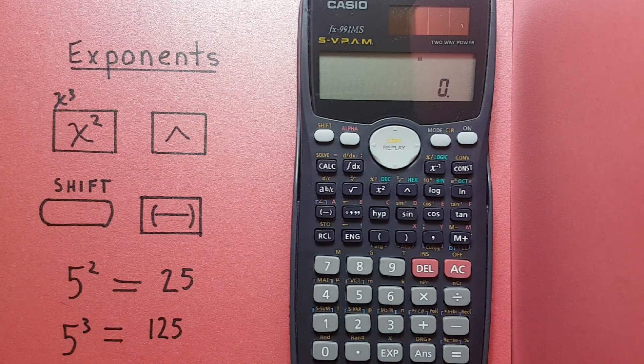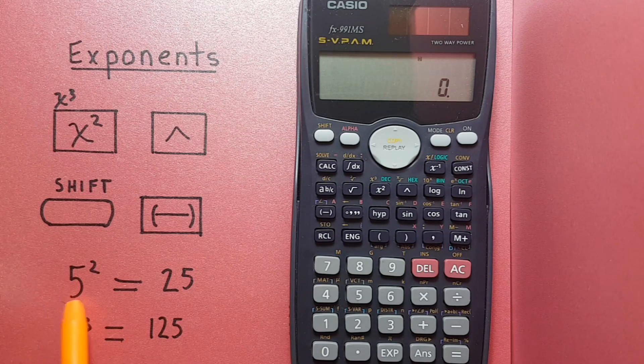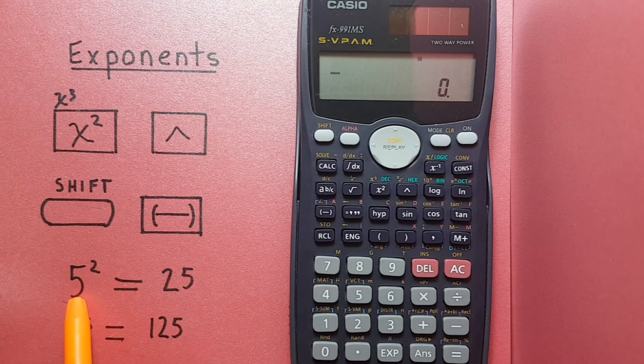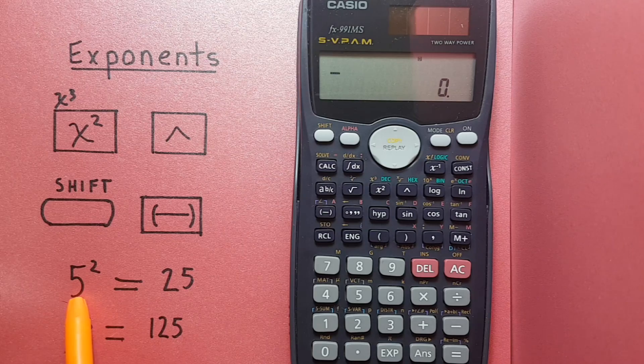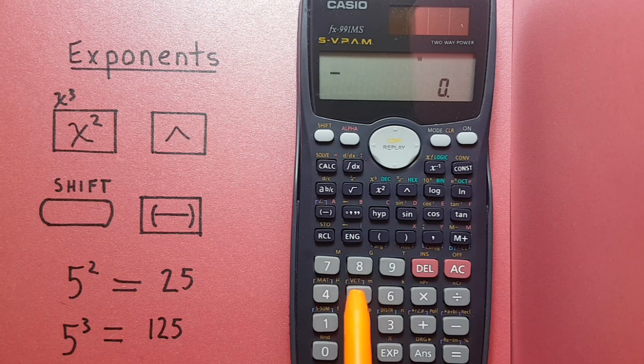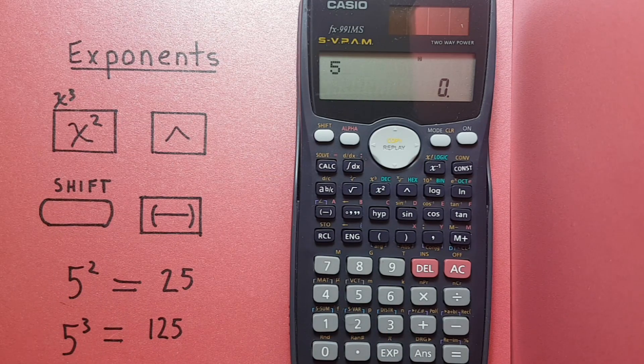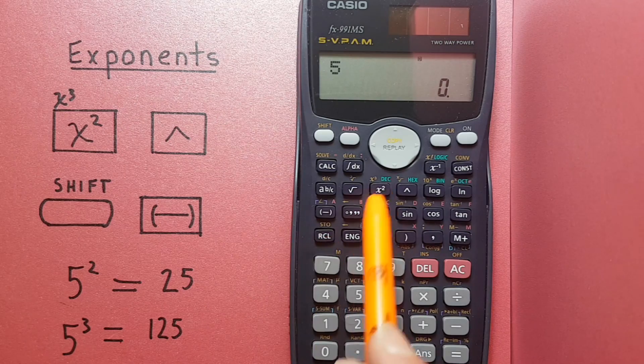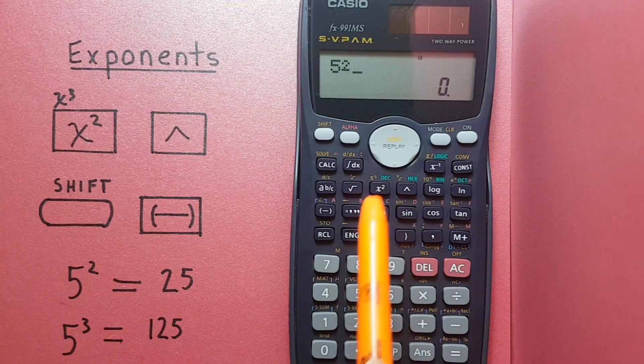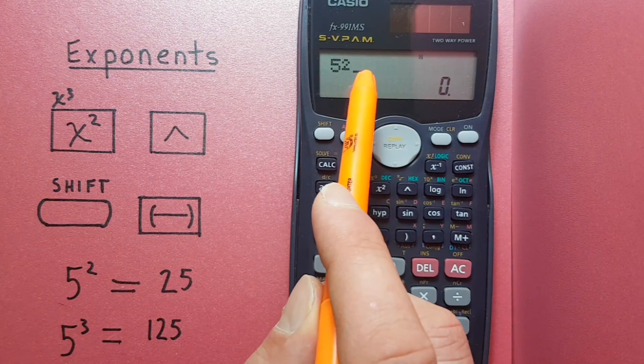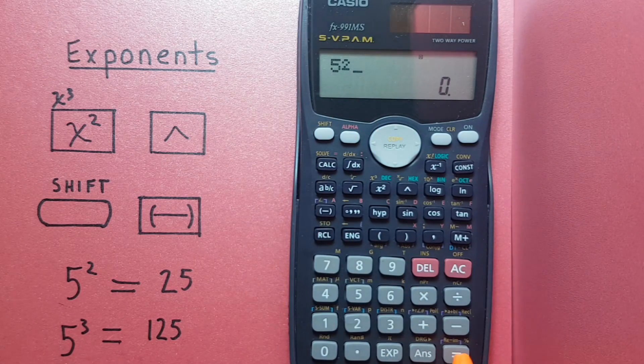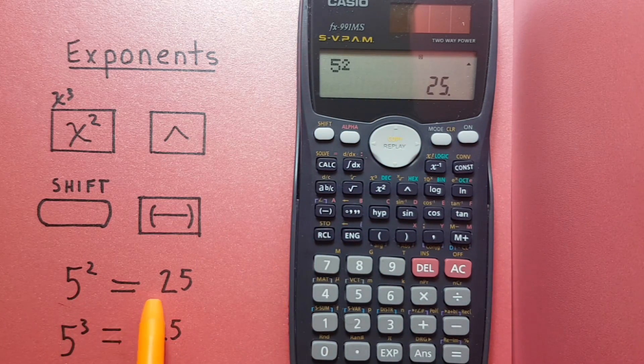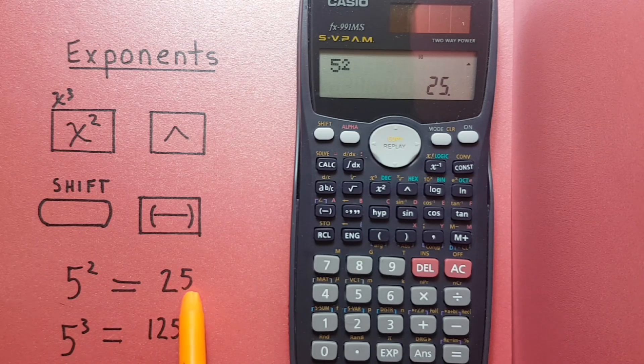Alright, to start we will look at squaring a number, so 5 squared or 5 to the power of 2. To do this we enter the number and then if it's just a square we can use this button here, x squared. See in the top of the screen 5 to the power of 2, and we press equals. We now see 5 squared equals 25.